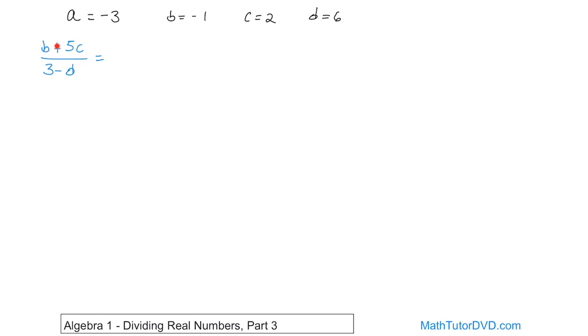So b here is going to be negative 1. So you have negative 1 plus 5 times c, c is 2, so it'll be written just like this. And then on the bottom we have 3 minus d, which is 6.